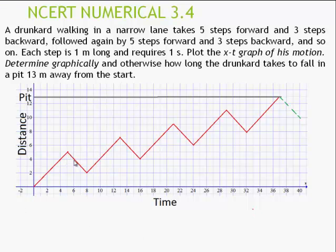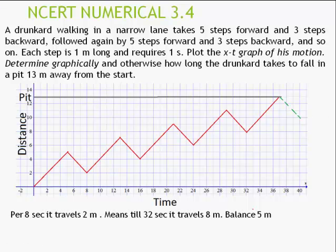When the first step goes 5 forward then 3 back, and so on repeatedly — when it reaches 32 seconds it would go forward toward the pit. The green line shows the next step going forward falls into the pit and won't come back. Mathematically: per 8 seconds he travels 2 meters; after 32 seconds he has covered 8 meters. The last 5 meters takes 5 more seconds (from the 5-step forward stride at the given pace), so total time elapsed is 37 seconds.